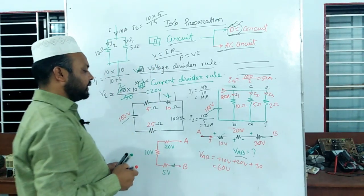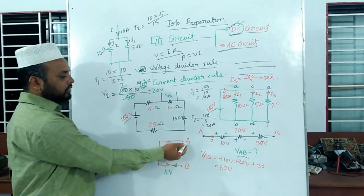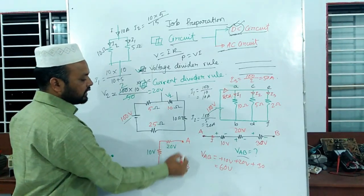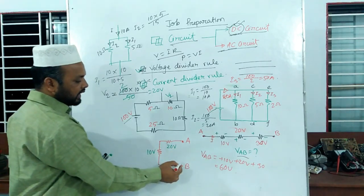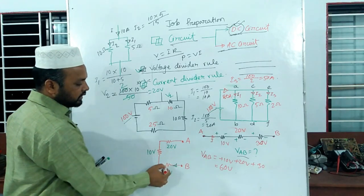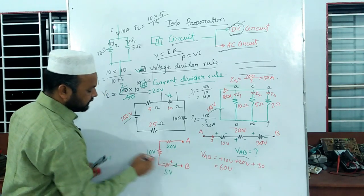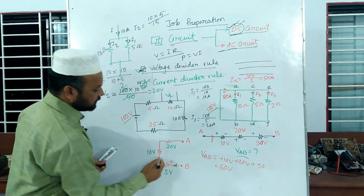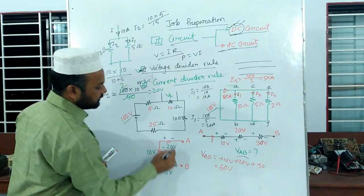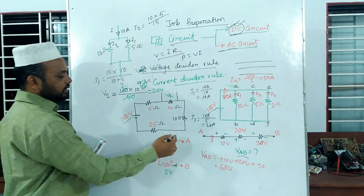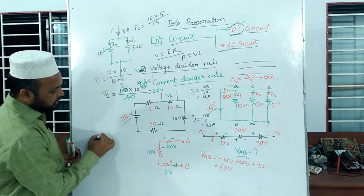Now, VAB — how about VAB? VAB and the current direction is VAB. A plus, A minus. Current is here. A plus VAB. This is VAB.